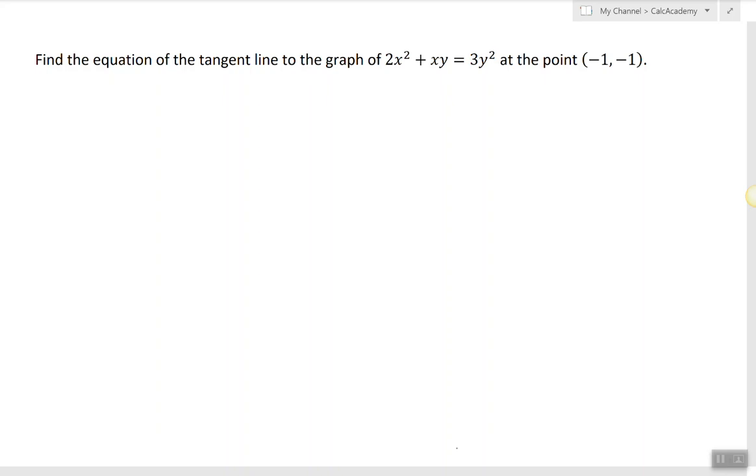When we have a question about finding the tangent line, we always start by writing the point-slope formula, which is y minus y₀ equals m times x minus x₀. Now the point in this case is given, so x₀ is negative one and y₀ is negative one, so we need to focus on the slope.